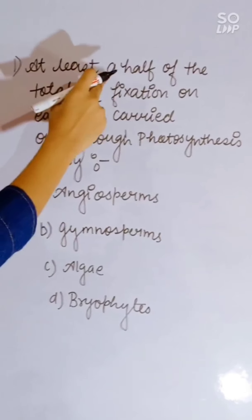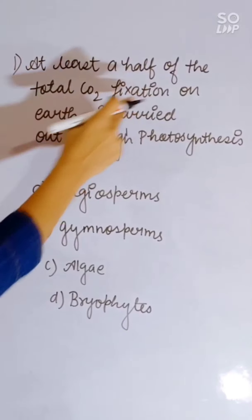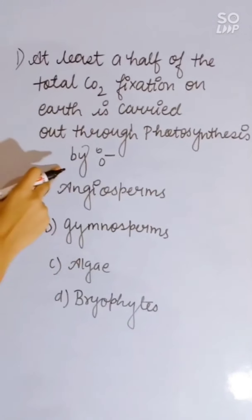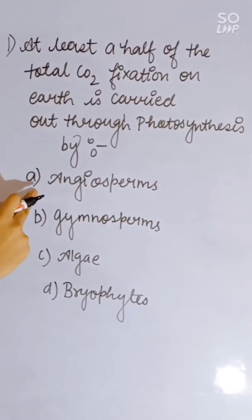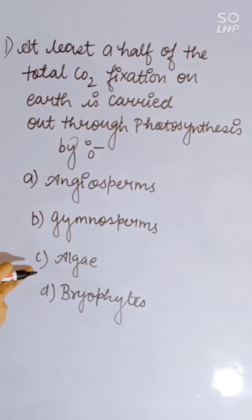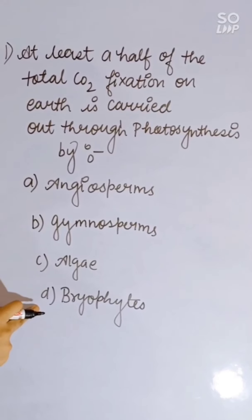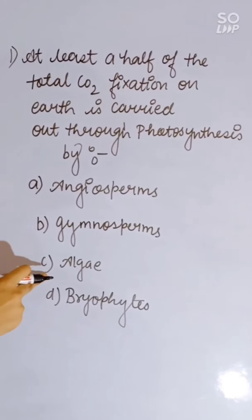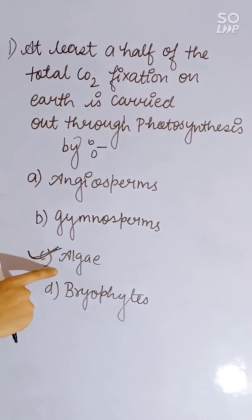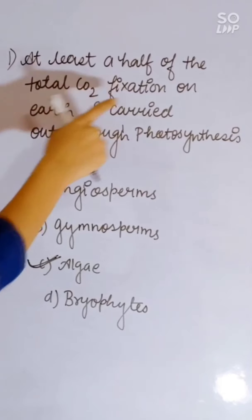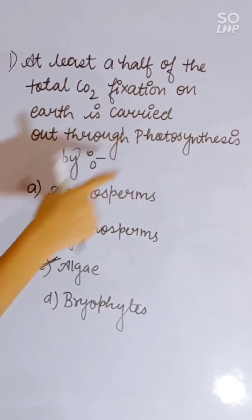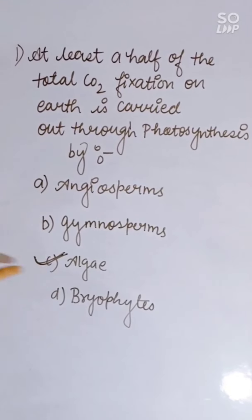At least half of the total CO2 fixation on Earth is carried out through photosynthesis by: angiosperms, gymnosperms, algae, or bryophytes. Algae help in CO2 fixation during photosynthesis. Correct answer is algae.